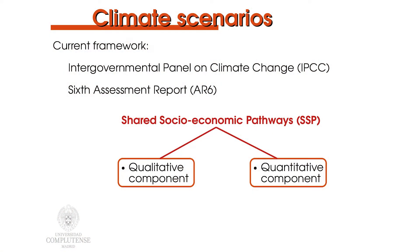The current framework of climate scenarios in the sixth assessment report of the Intergovernmental Panel on Climate Change is what is called Shared Socioeconomic Pathways, or SSP for short. These are a set of five alternative futures of societal development which consist of qualitative and quantitative components.